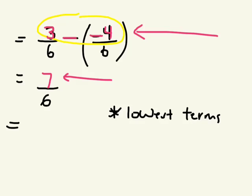This fraction line also means divided by, so it's 7 divided by 6. We want our answer to be a fraction, not a decimal. How many times does 6 go into 7 evenly? Once. And how many do you have left over to get to 7? One. So you'd have one out of six left over — that gives you 1 and 1 sixth.